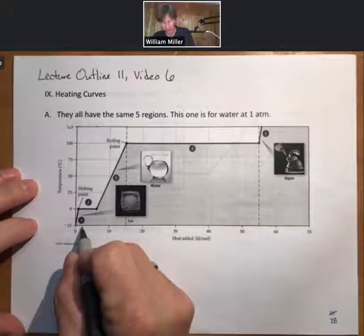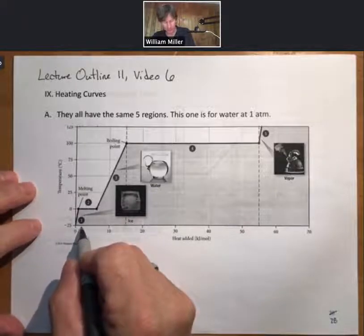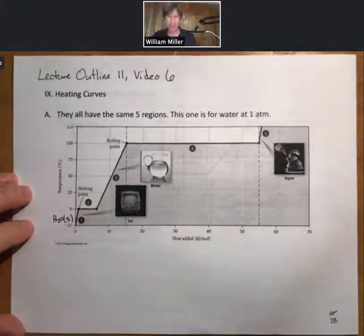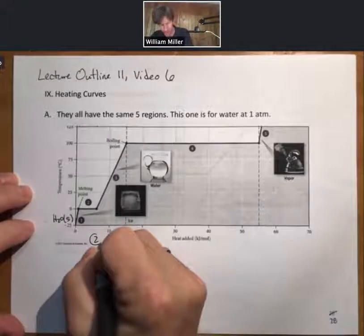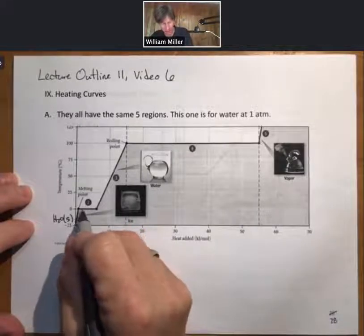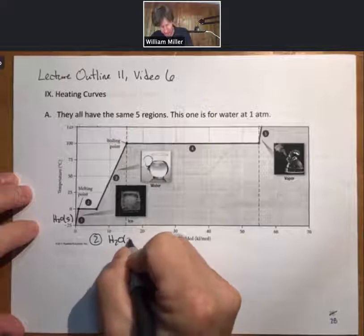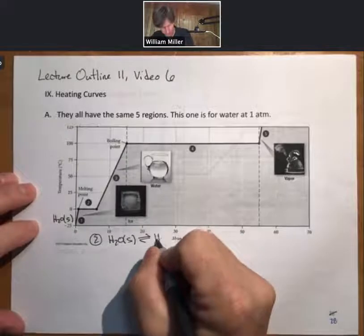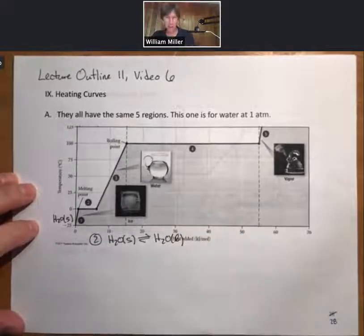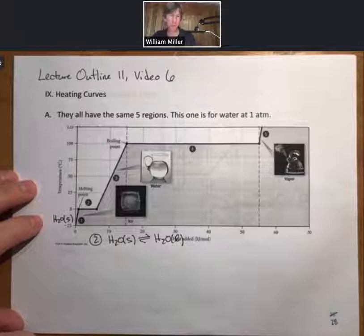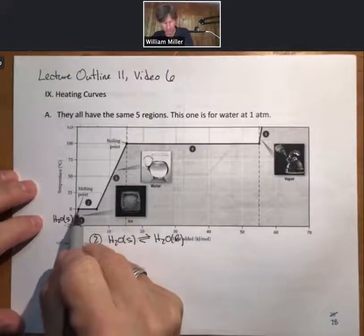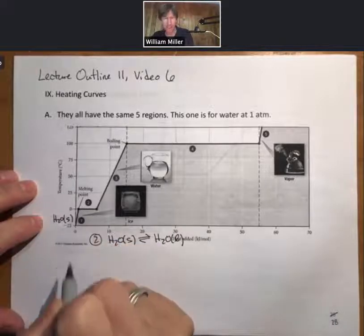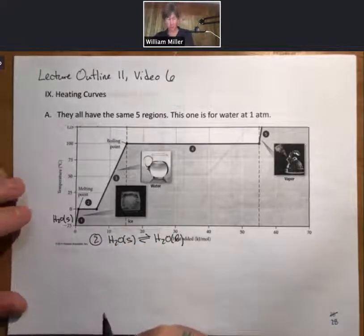Region number one for water is going to be ice, so H2O solid. Region number two is going to be the solid to liquid transition, so H2O solid using our new equilibrium arrows goes to H2O liquid. We use our equilibrium arrows because sometimes we'll be turning ice into water, other times we'll be turning water into ice.